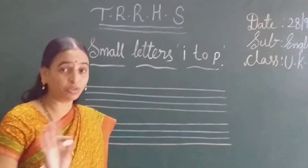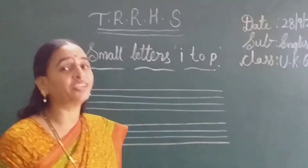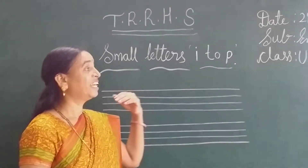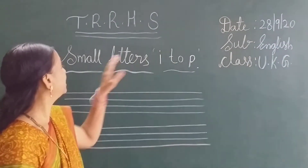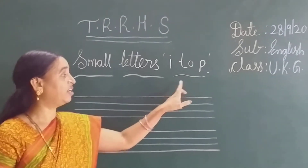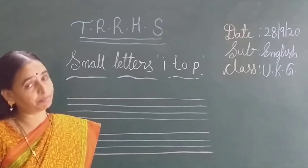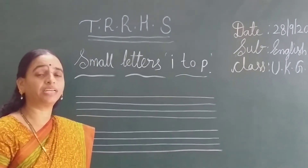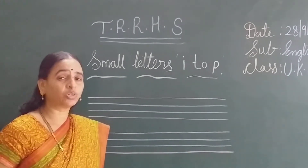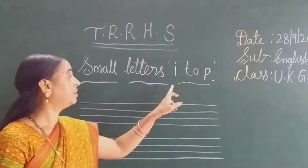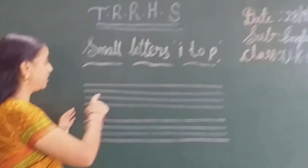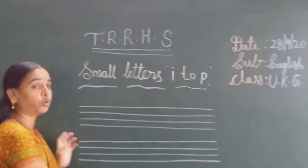Happy good morning, my dear UKG children. Today's class is English. In English we are learning small letters I to P, because in our previous classes we have completed letters A to H. So today we are learning letters I to P — small letters, how to write in four rows.